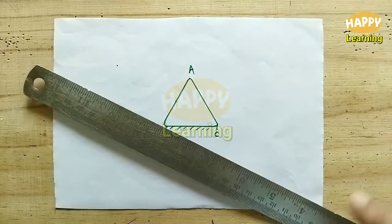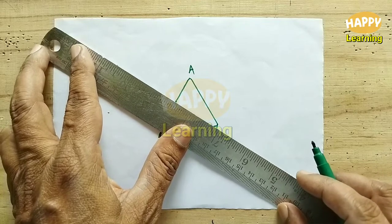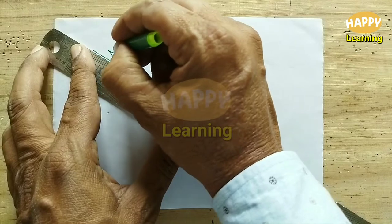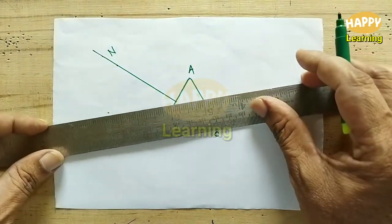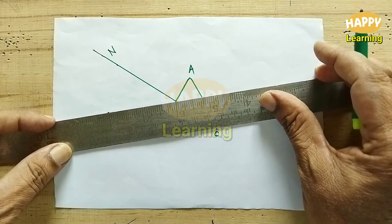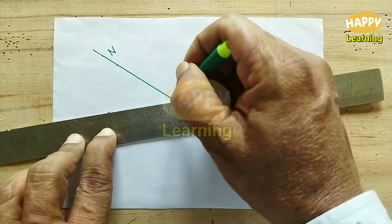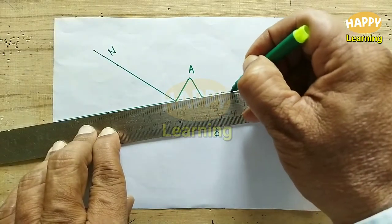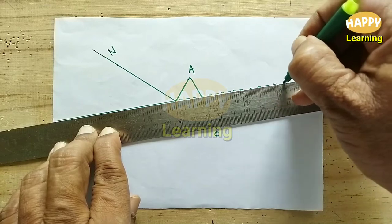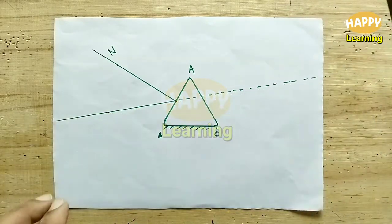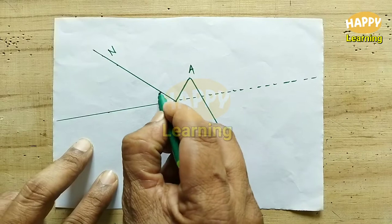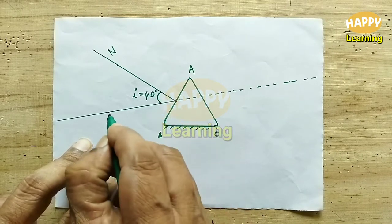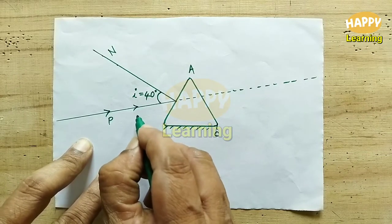Join these two points — from the refracting surface AB to the point taken at 90 degrees — that will be the normal. The other line through the other point will be the incident ray. Extend this incident ray with dotted lines. The angle of incidence i equals 40 degrees. This incident ray is called PQ.